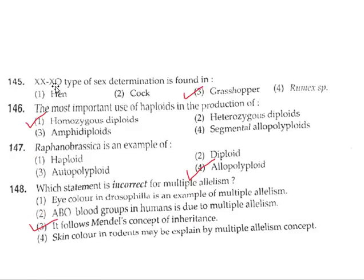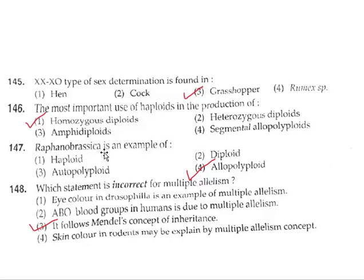Question 145: XXO type of sex determination is found in grasshopper. Option 3. Question 146: The most important use of haploids is the production of homozygous diploids. Option 1. Question 147: Raphanobrassica is an example of an allopolyploid. Option 4.